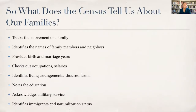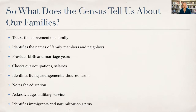So what do we learn from the census? There are all kinds of things, and every census has had different questions. It tracks the movement of a family. It identifies the names of family members and neighbors too. It can give us insights into birth and marriage years — it doesn't necessarily say the exact year, but we can figure it out. It gives us occupations and sometimes even salaries. It can tell us about living arrangements, educational level, military service, and whether they're immigrants and their naturalization status. For immigrants, it may even give us the town where the family is from in the old country.